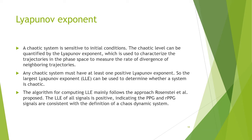A chaotic system is sensitive to initial conditions. The chaotic level can be quantified by the Lyapunov exponent, which is used to characterize trajectories in the phase space and measure the rate of divergence of neighboring trajectories. Any chaotic system must have at least one positive Lyapunov exponent, so the largest Lyapunov exponent (LLE) can be used to determine whether a system is chaotic. The LLE of all signals is positive, indicating that PPG and RPG signals are consistent with the definition of a chaotic dynamic system.